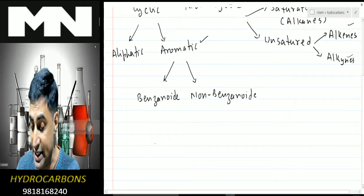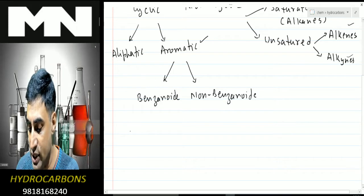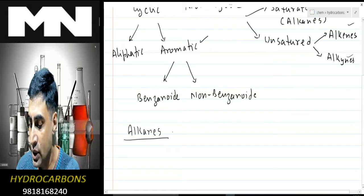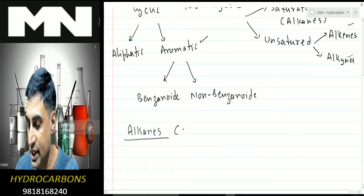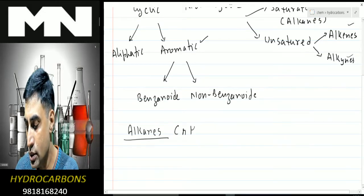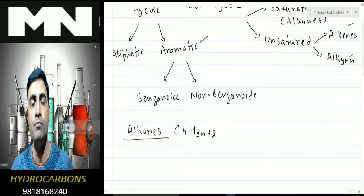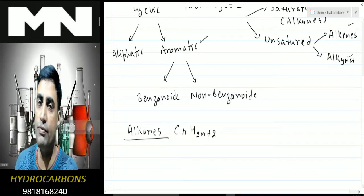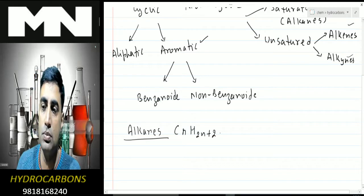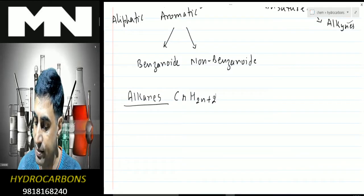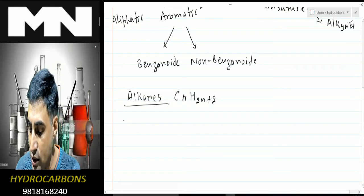We'll start with alkanes. The general formula for alkanes is CₙH₂ₙ₊₂. Whenever we study a functional group or compound, we study their method of preparation, physical properties, and chemical properties. So first we'll see the method of preparation.